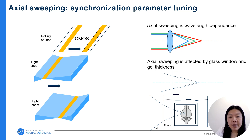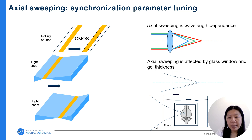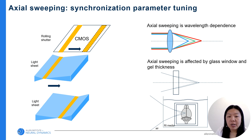Several factors affect the synchronization. It seems straightforward: when the ETL focuses the beam on the left edge of the imaging field, the rolling shutter starts at that edge and stops at the other. But in reality, the ETL has mechanical moving parts and the real focus-shifting curve has some lag relative to the input control signal. Also, chromatic aberration of the ETL, the thickness of the glass window, and the gel surrounding the tissue can affect the focal plane of the beam. Carefully tuning the parameters of the ETL control signal is very important for good synchronization.